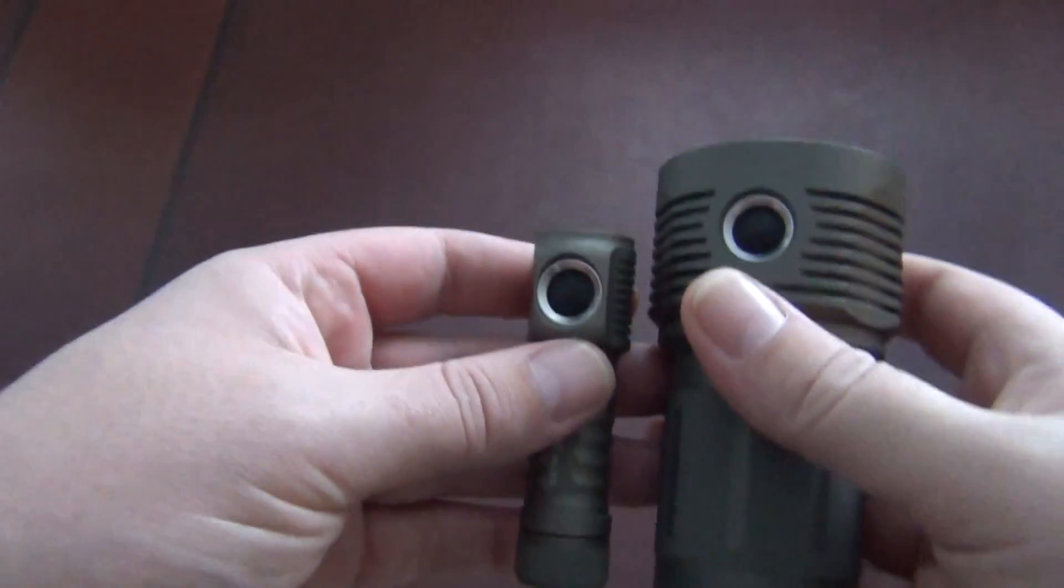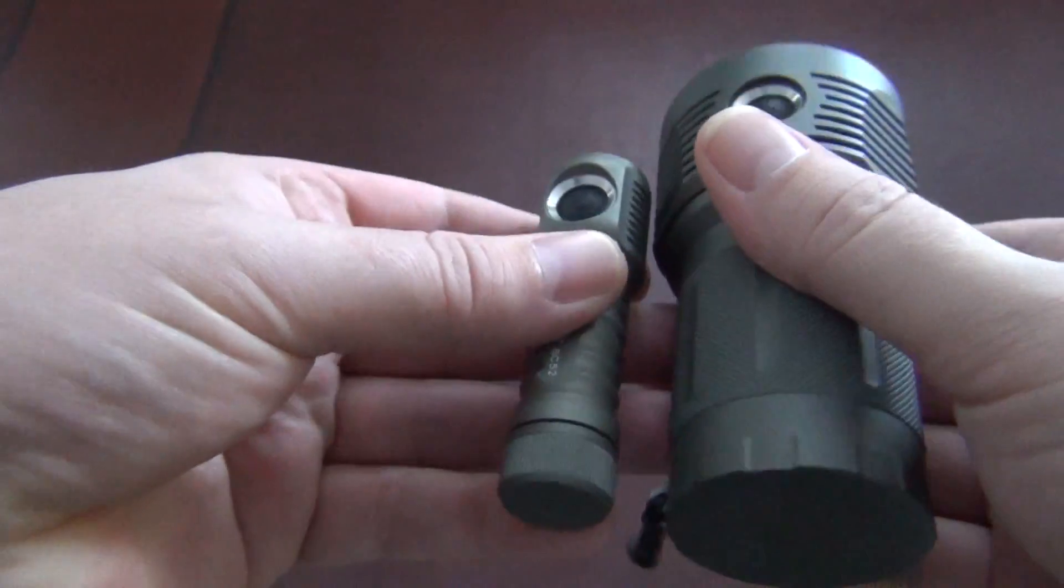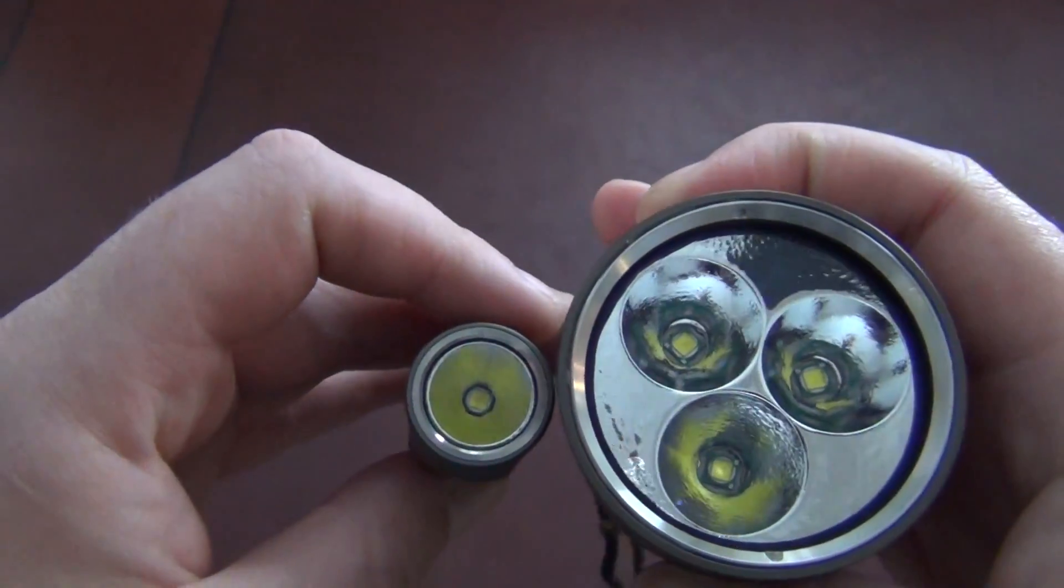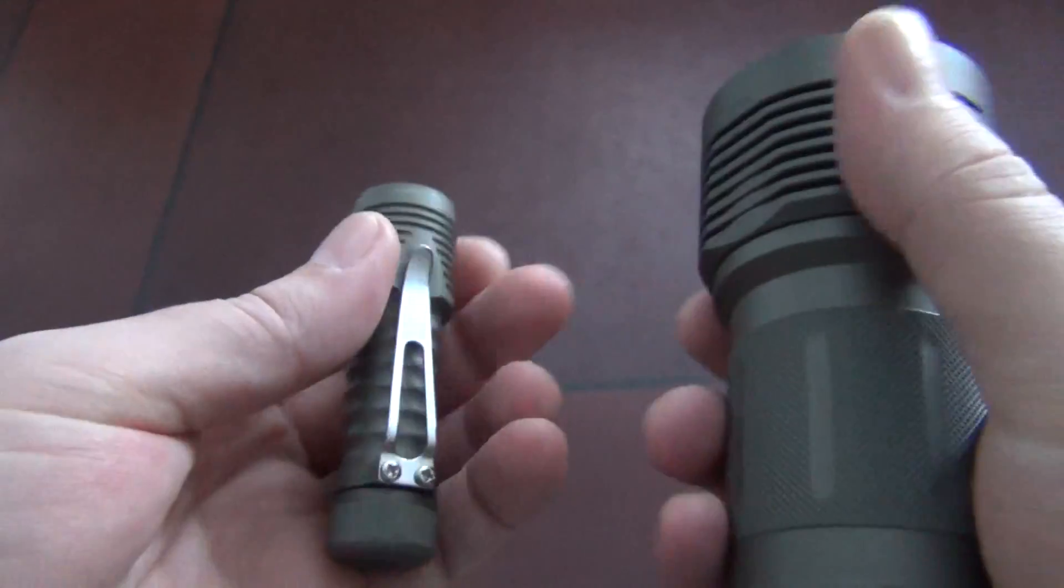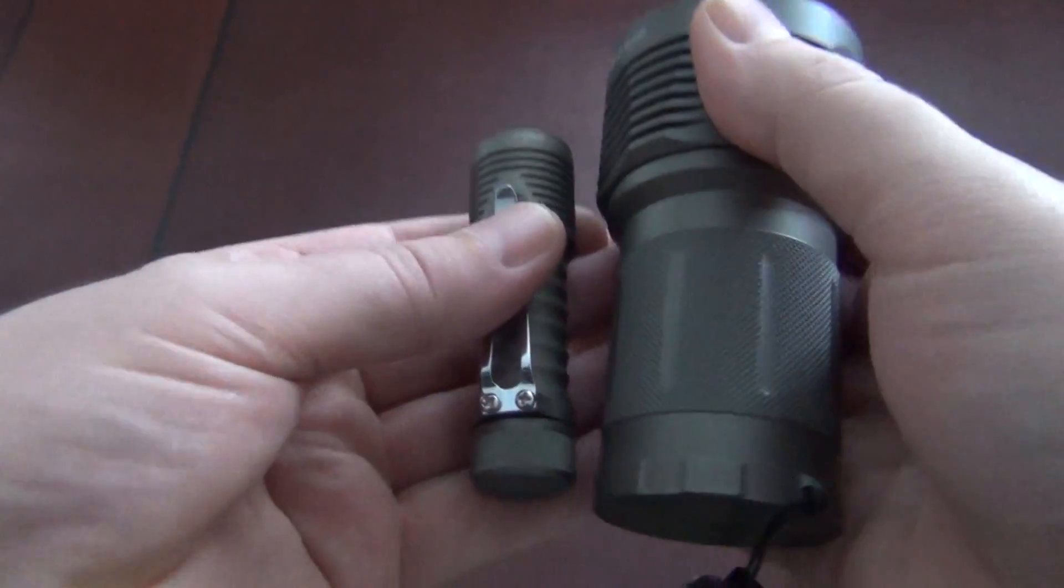This is it compared to the SC52. So you can see it's really a small light for the rated 2400 lumens.